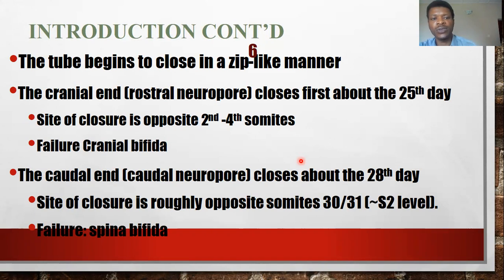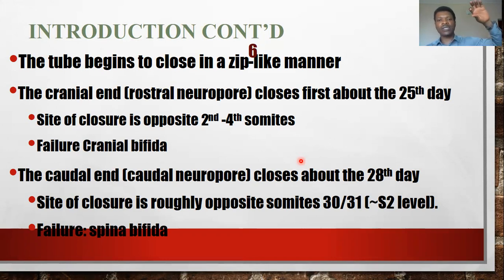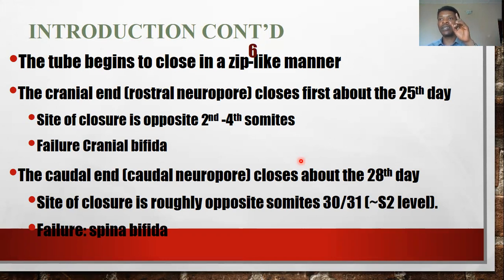The cranial closure around day 25 occurs around the 2nd to 4th somites, while the spinal cord closure at day 28 occurs below the 4th somite — everything below the 4th somite forms the spinal cord, which is the caudal neural cord. The upper part is the cranial neural cord. Once the tube is formed, it has two openings — one cranially called the cranial neuropore, and one caudally called the caudal neuropore.